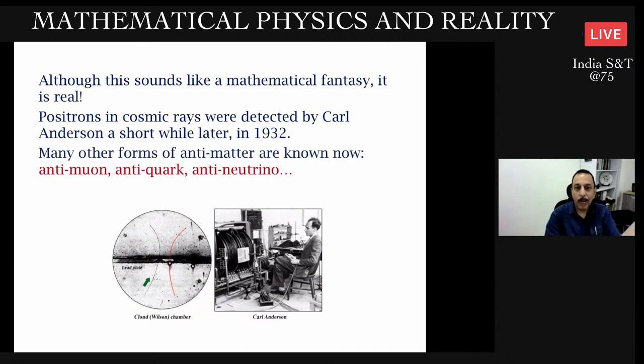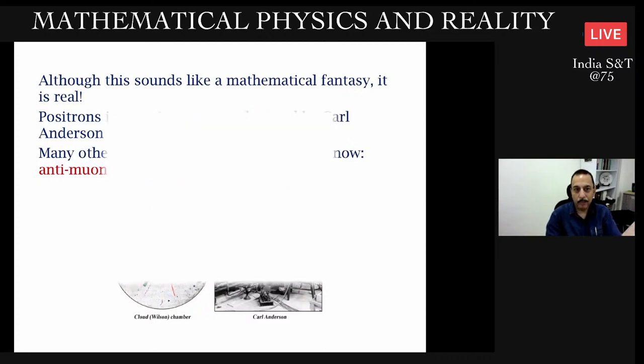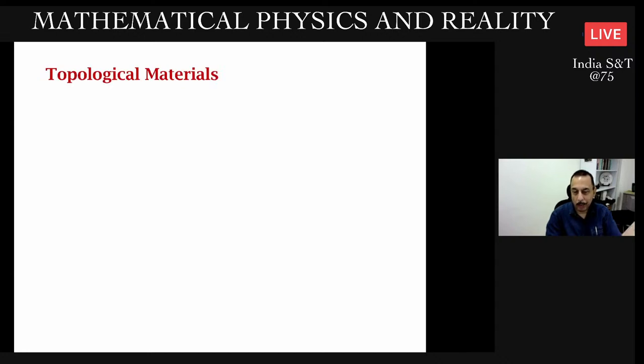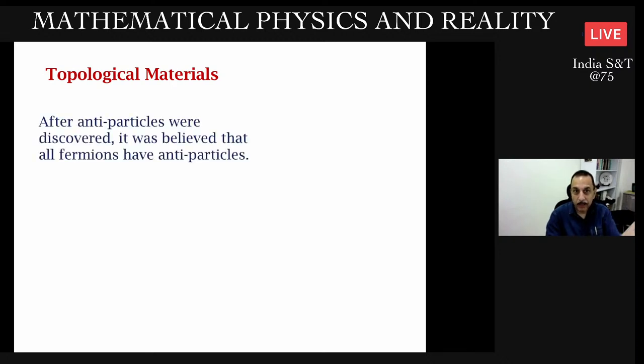Turns out everything about these positrons follows from what Dirac predicted. In fact, there are many other forms of antimatter such as antimuons, antiquarks, antineutrinos. The whole set of particles had to be doubled, literally doubled, because of Dirac's mathematical proposal based on special relativity. From the 1920s and 30s, let's jump to the 21st century, although some of this started around the time of Dirac.